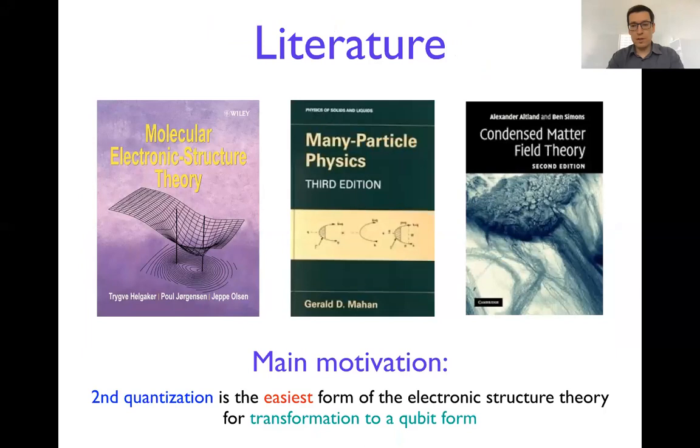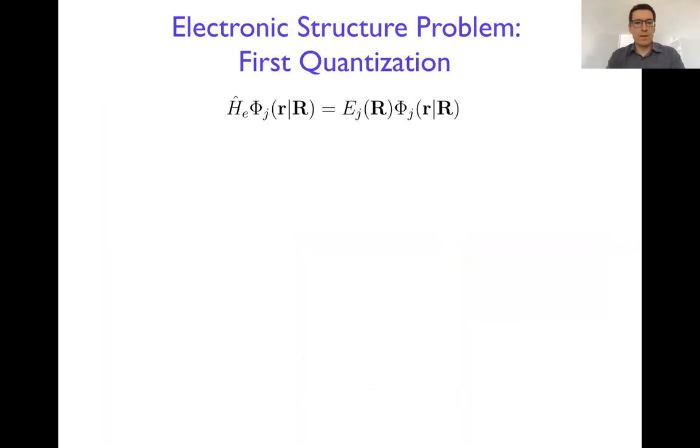The main motivation for second quantization is that it's one of the easiest forms of electronic structure theory to connect with the qubit formalism that is going to be used for quantum computing.